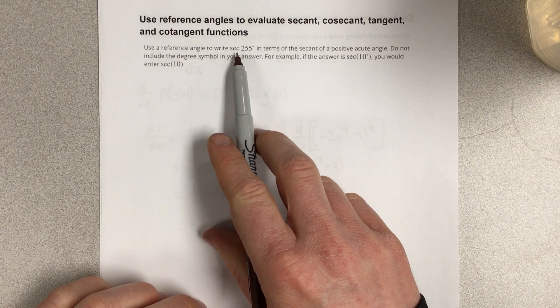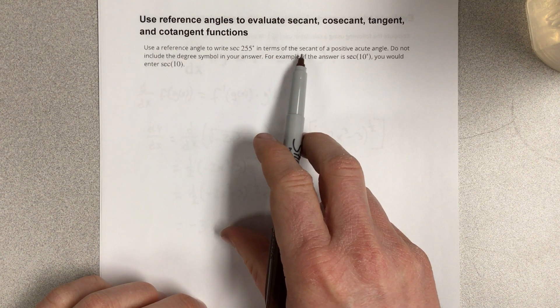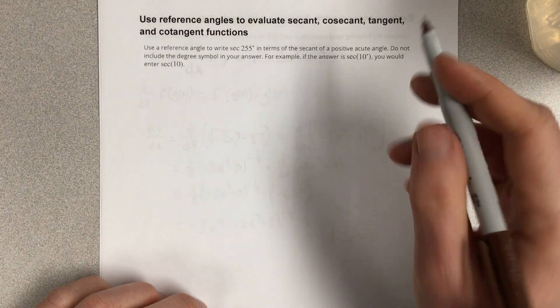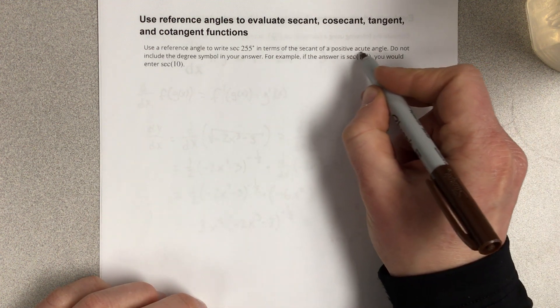It says use a reference angle to write secant 255 in terms of the secant of a positive acute angle. When they say positive acute angle, they're talking about quadrant 1.